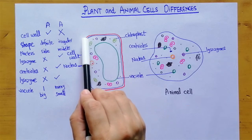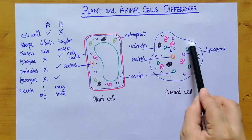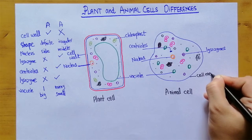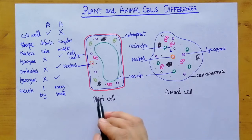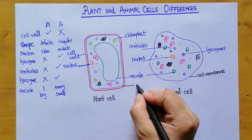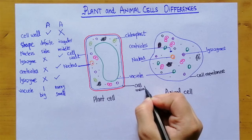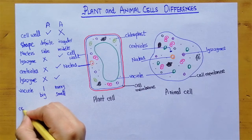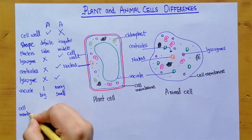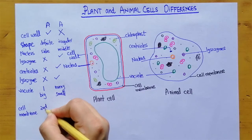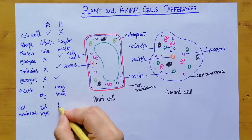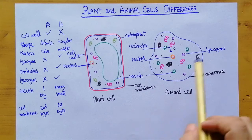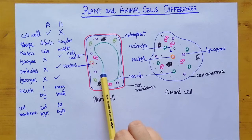The outer boundary in plant cells is the cell wall, but the outer boundary in animal cells is the cell membrane. In plant cells, the cell membrane is actually the second layer inside the cell wall, but in animal cells it is the first and outermost layer.